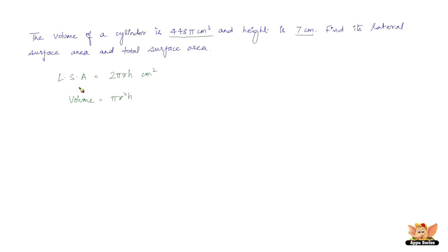This gives us the lateral surface area. Now, how do we find the total surface area? Total surface area is nothing but the lateral surface area plus the areas of the top and the bottom of the cylinder. The top and the bottom are in the form of a circle and the area of the circle is πr². This is the way we have to solve the problem.